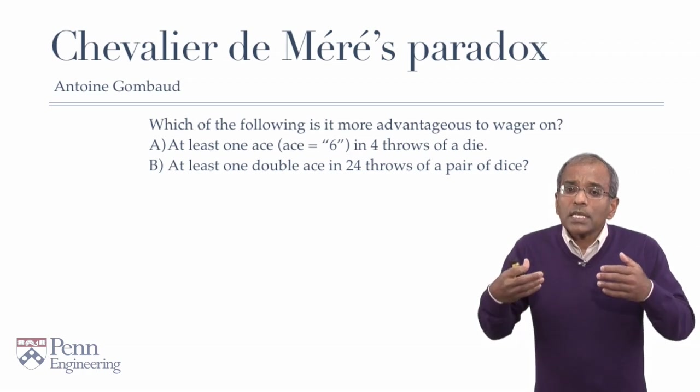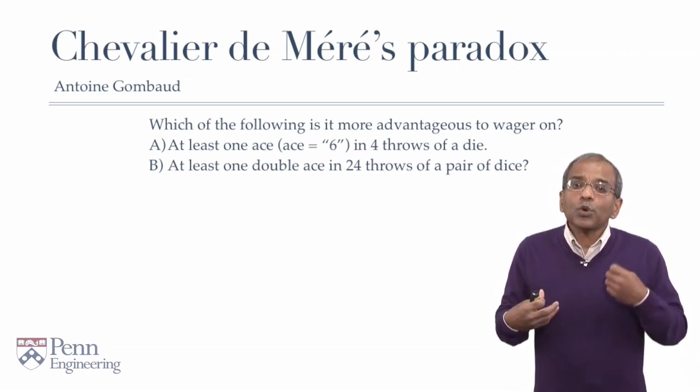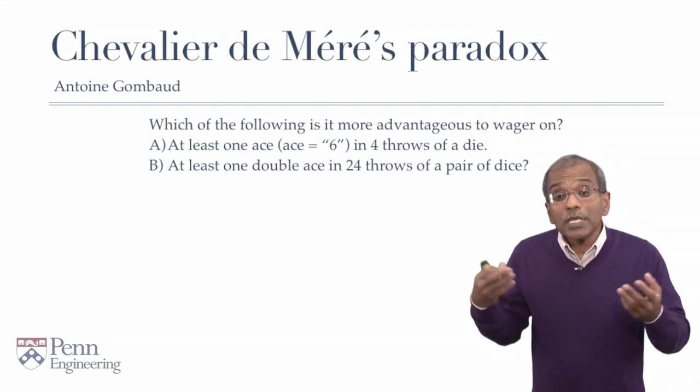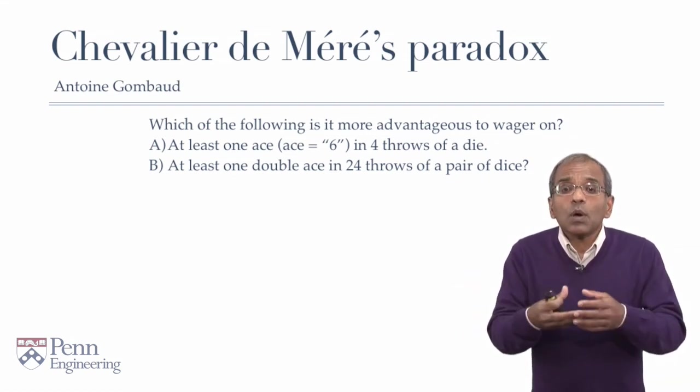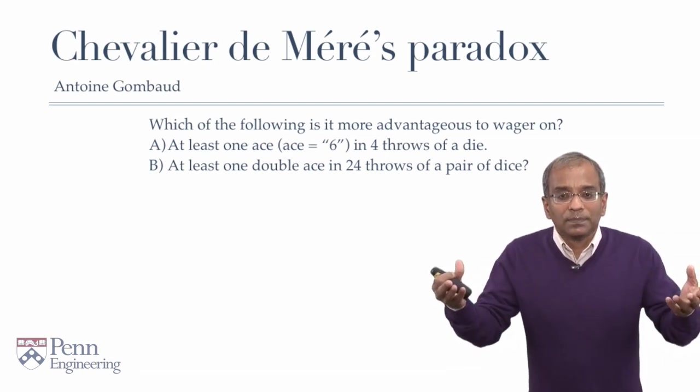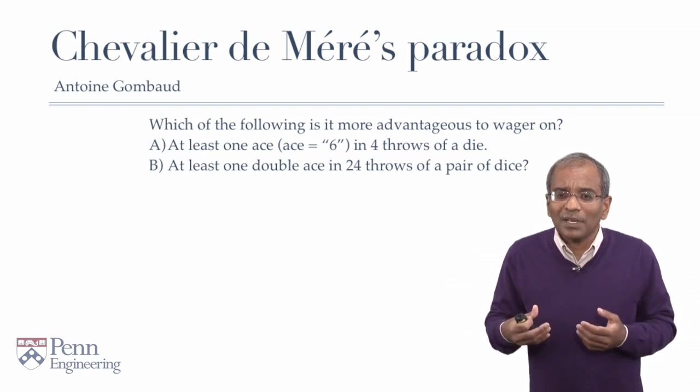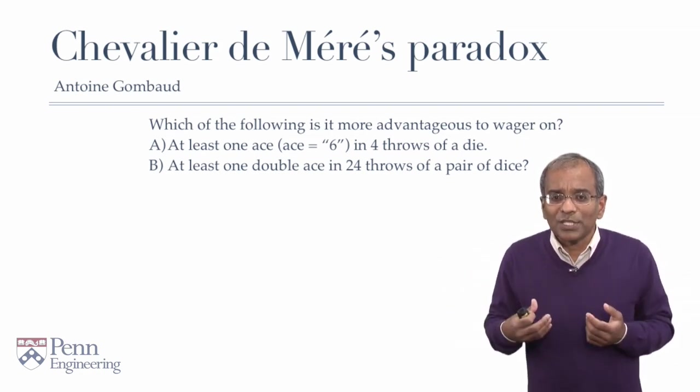Or, is it preferable, is it more likely, that if one throws a pair of dice 24 times, that somewhere in those 24 throws, one gets a pair of aces? I'll pause to let you think about this for a moment. Where does your intuition lead you?